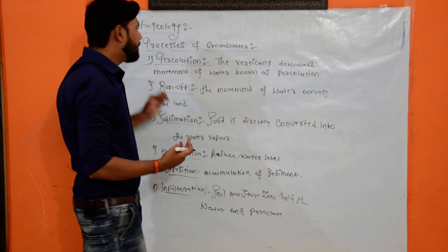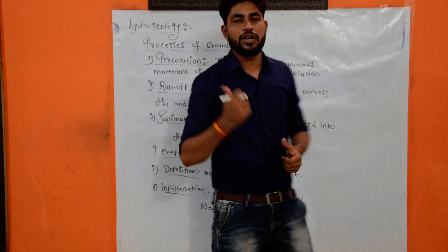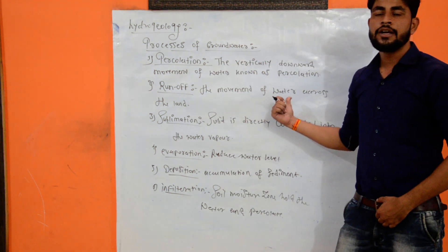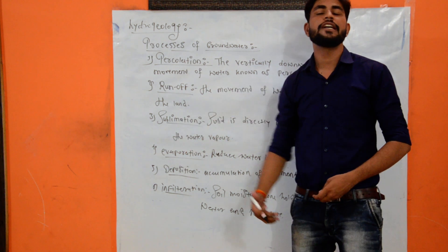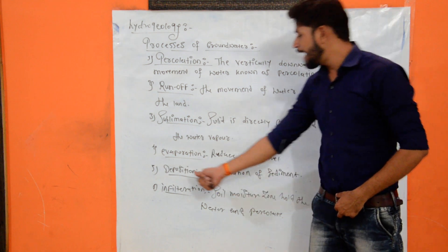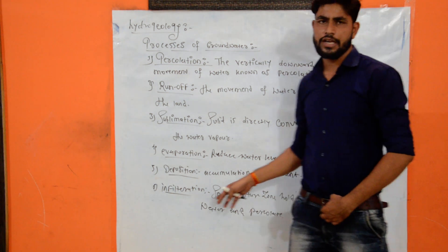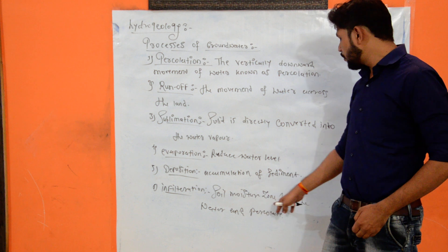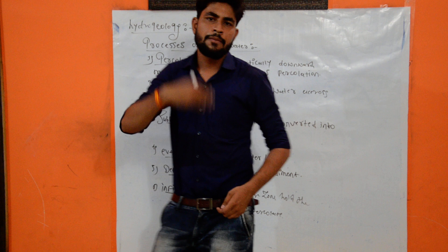So in the hydrological cycle or in groundwater, there are different processes: percolation — the vertically downward movement of water; runoff — the movement of water across the land; sublimation — solid directly converted into water vapor; evaporation — reducing the water level; deposition — accumulation of sediments; and infiltration — the soil moisture zone holds the water and percolates.